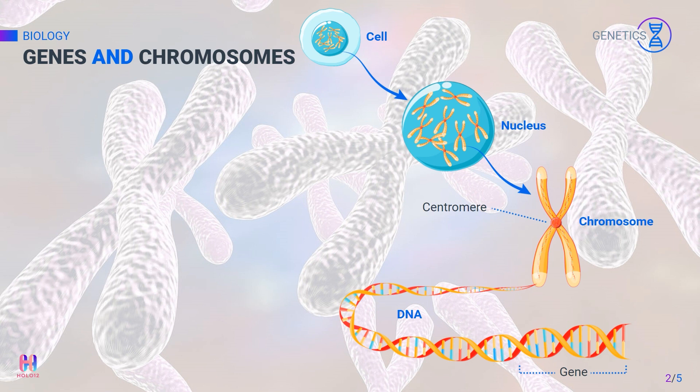Do you know how you get characteristics similar to your parents? Well, it is because these genes that control the characteristics pass from one generation to the next.